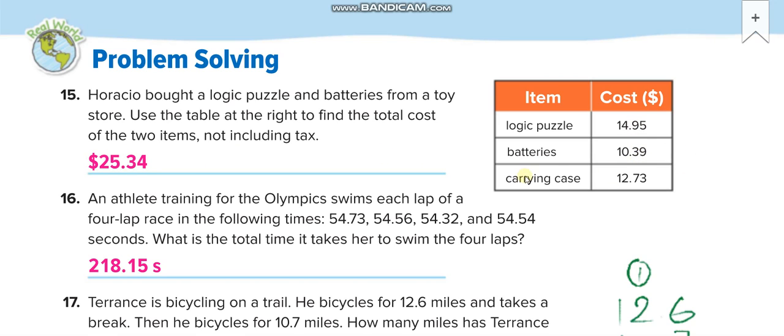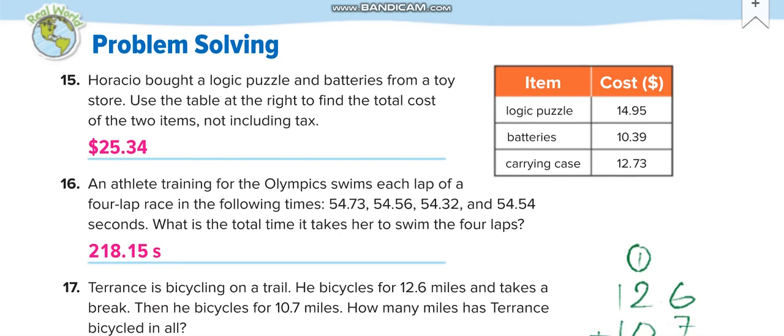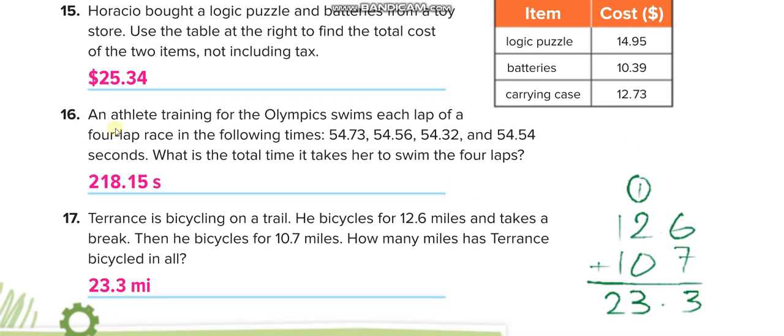An athlete training for the Olympics swims each lap of a four-lap race in the following times. These are the four laps: one, two, three, four. So you write them all in a series and add them. The answer is 218.115 seconds.